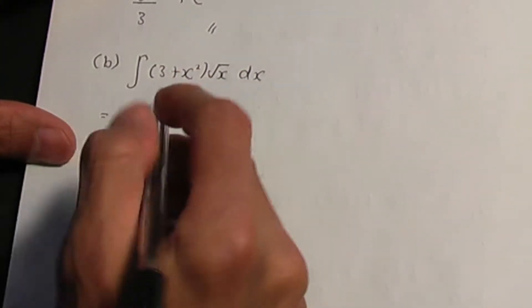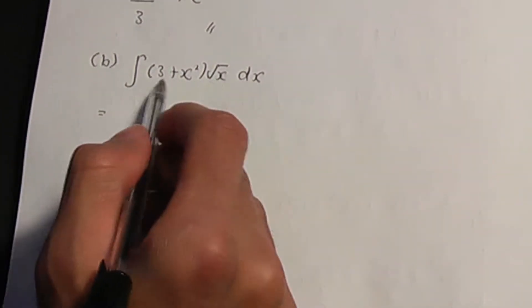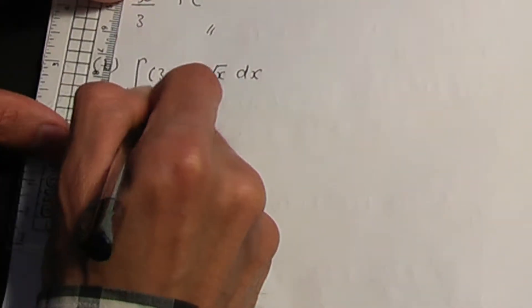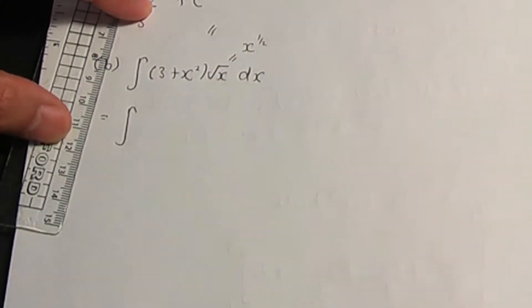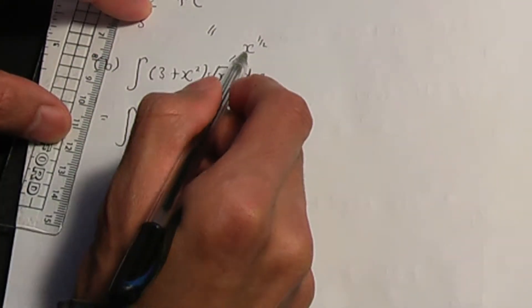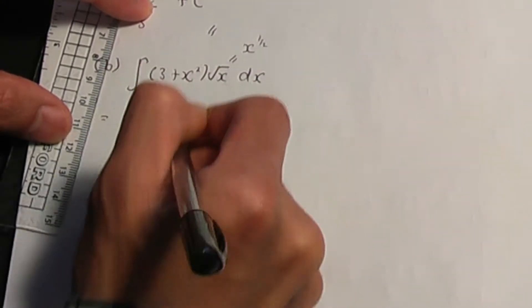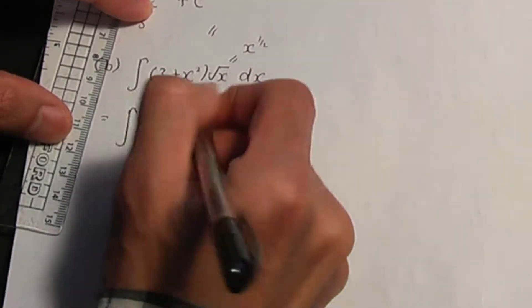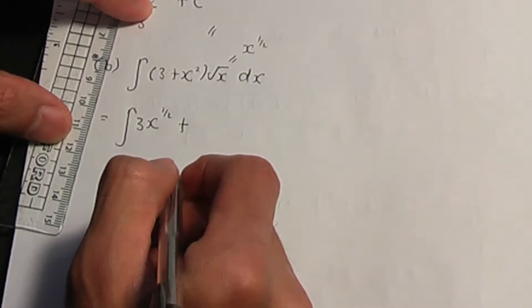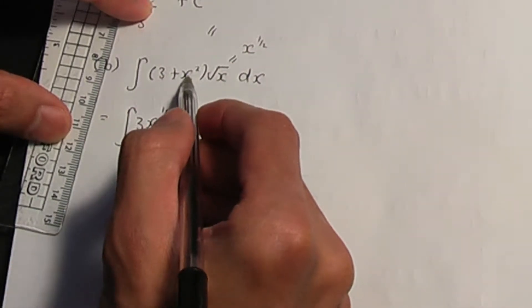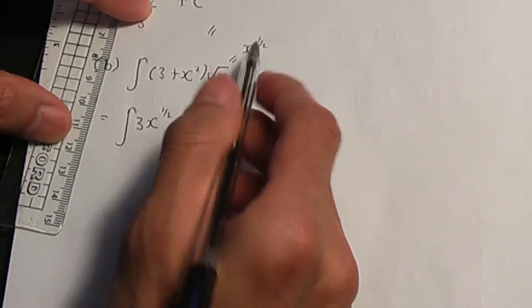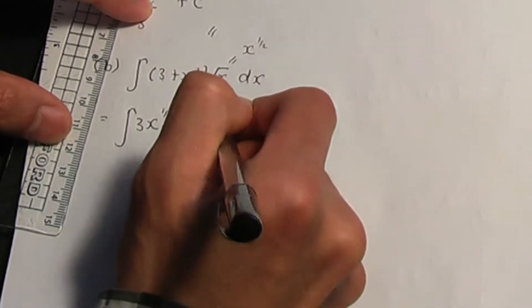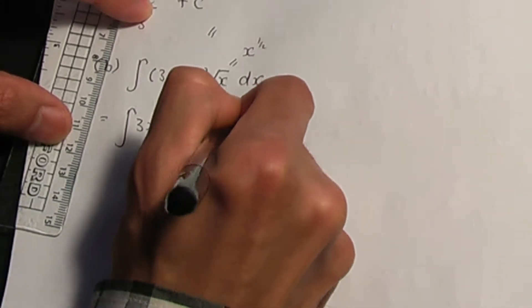Before we integrate, let's expand the brackets. Root x, remember, is the same as x to the half. So 3 times x to the half is 3x to the half, plus x squared times x to the half. In indices, when you multiply two terms having the same base, you add the powers. So you get x to the power 2 plus half, which is 5 over 2.